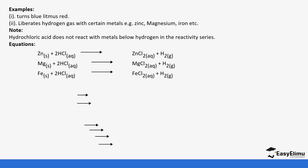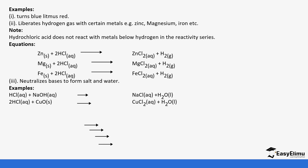For example: hydrochloric acid reacts with zinc to form zinc chloride and hydrogen gas; with magnesium it forms magnesium chloride and hydrogen gas; with iron it forms iron chloride and hydrogen gas. Because of the way it ionizes, hydrochloric acid is also able to react with bases to form salt and water.